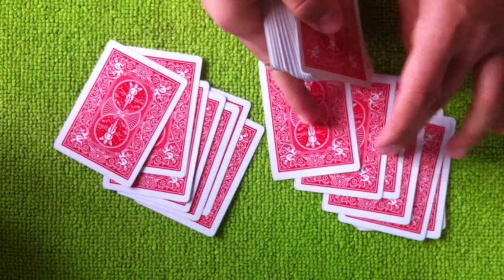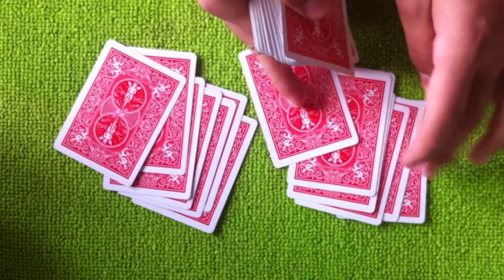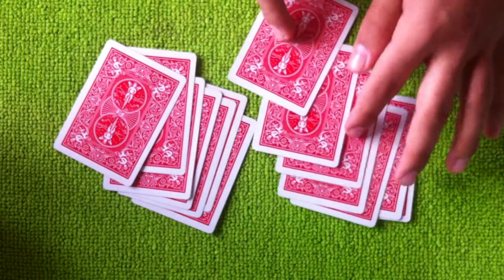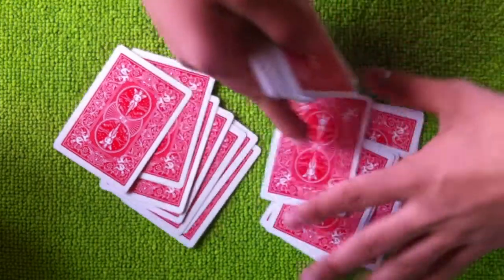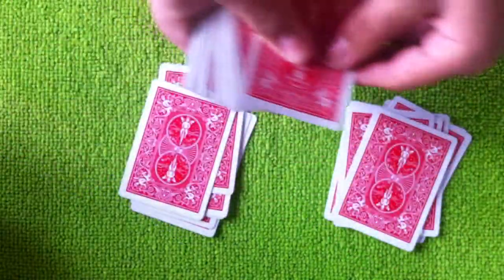Seven cards over here. One, two, three, four, five, six. Seven cards over here. One, two, three, four, five, six, seven. That means I put one on your pack now.